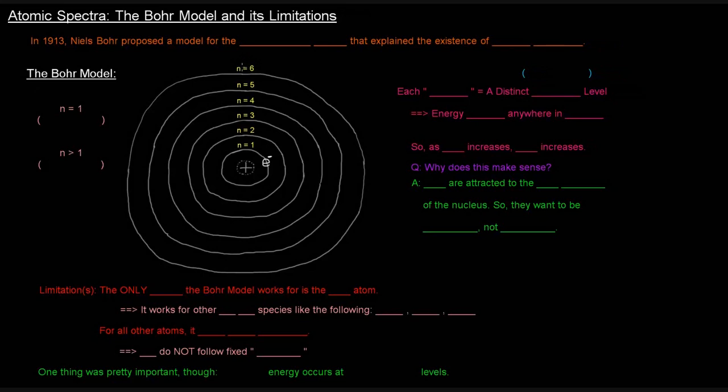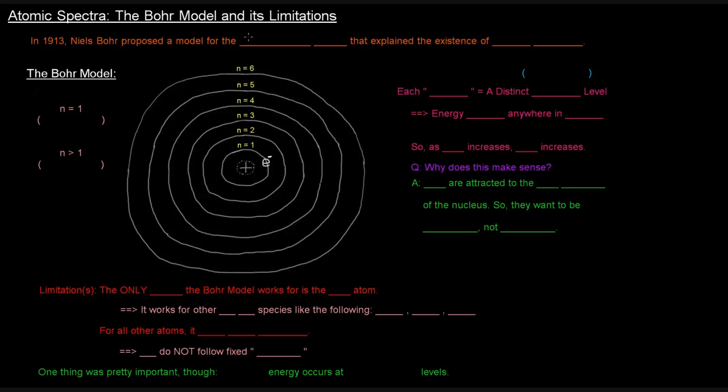In this video, we're going to discuss the Bohr model and its limitations. In 1913, Niels Bohr proposed a model for the hydrogen atom, which is actually a pretty important part of this, that explained the existence of line spectra, which we began to talk about in the previous video.